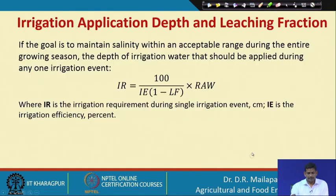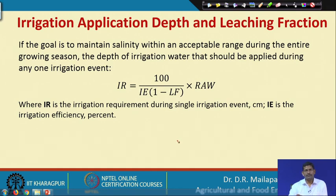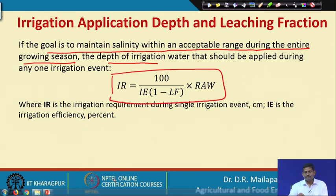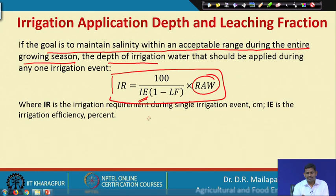For irrigation application depth and leaching fraction: if the goal is to maintain salinity within acceptable range during the growing season, the depth of irrigation water applied per irrigation event is estimated as: IR = [100 / (IE × (1 - LF))] × RAW, where IE is irrigation efficiency, LF is leaching fraction, and RAW is readily available water.